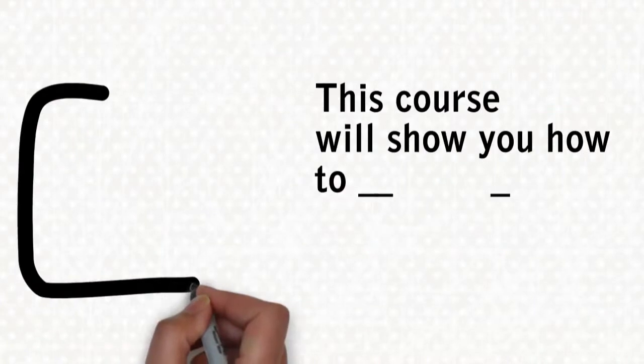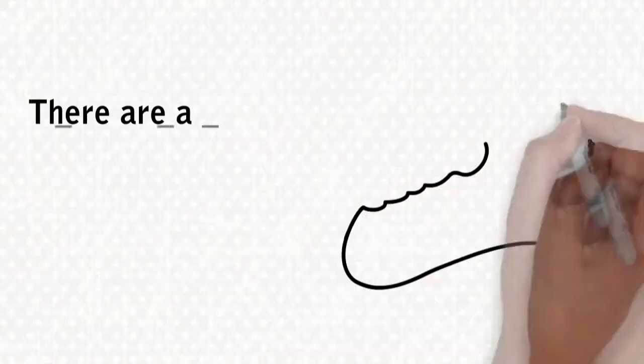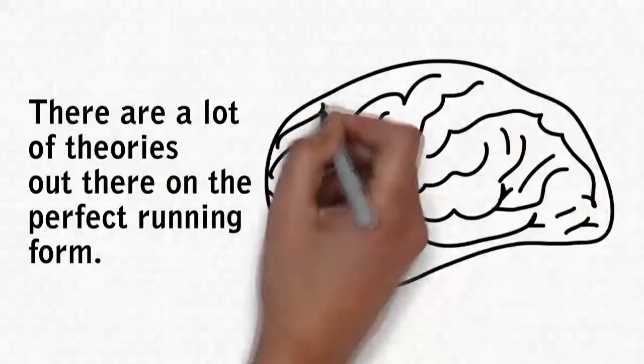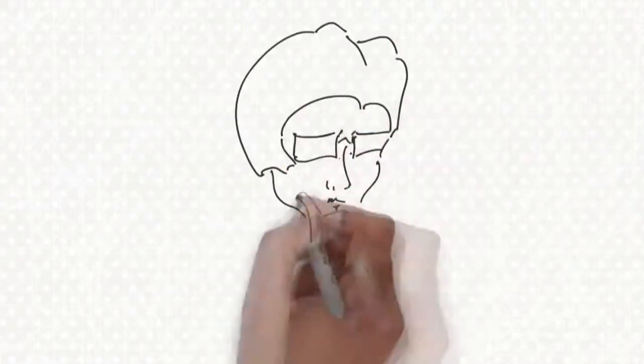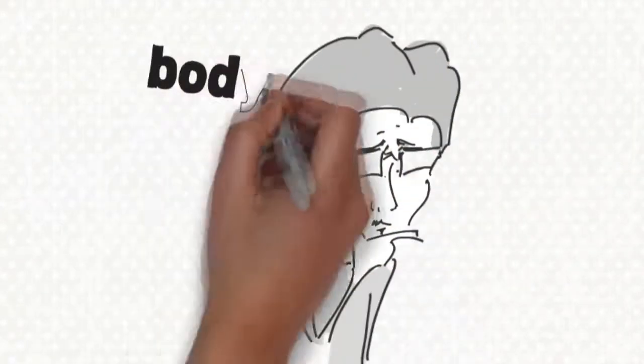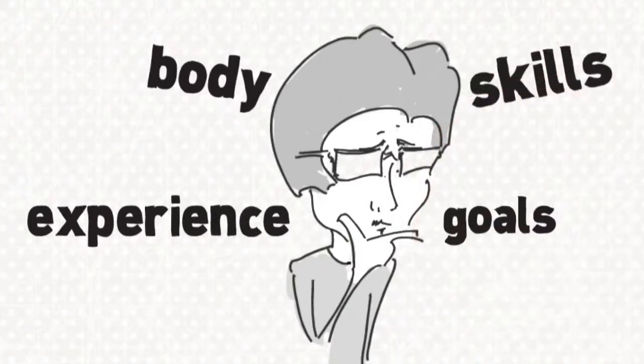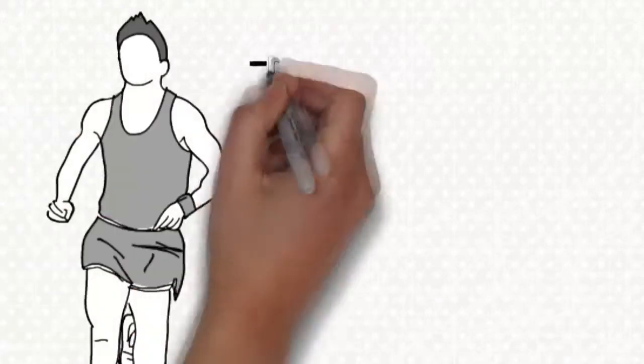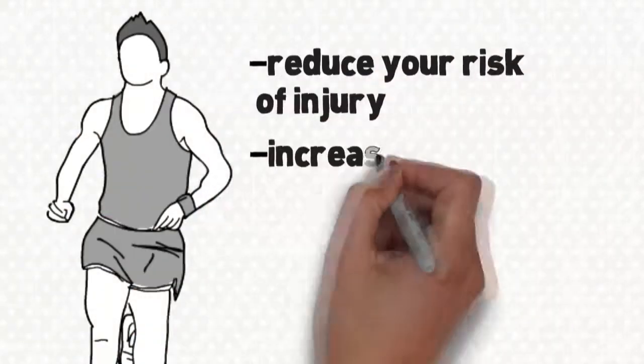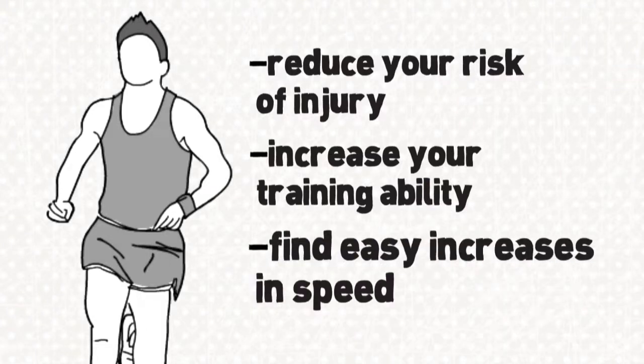This course will show you how to run with proper form that suits you. There are a lot of theories out there on the perfect running form, but the truth is we are all built differently and have a unique form that is right for us. In this course I will show you how to assess your own body, experience, skills and goals to truly hone the right run form for you. Once mechanically sound you will dramatically reduce your risk of injury, increase your training ability and find easy increases in speed that you didn't know you had in you.